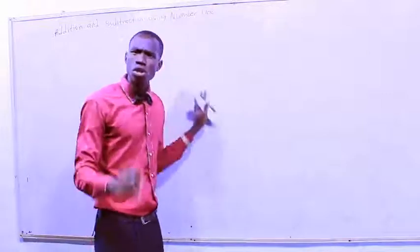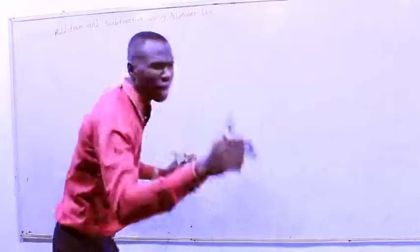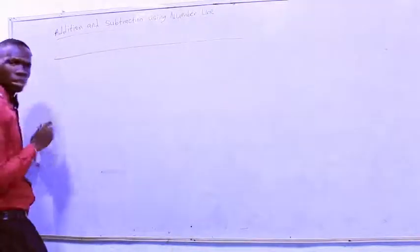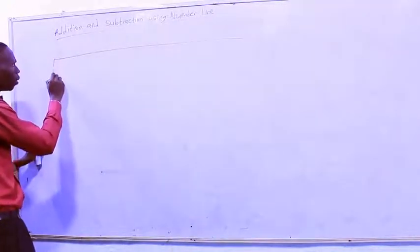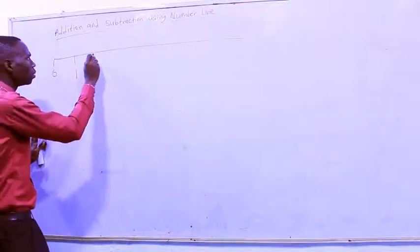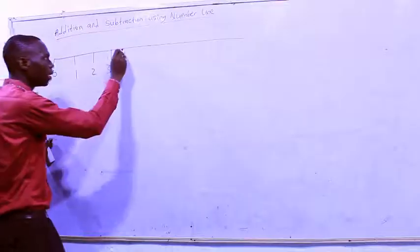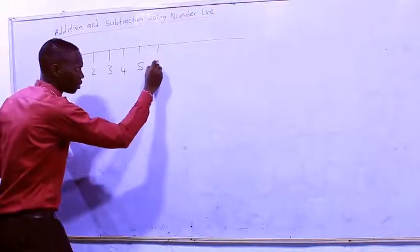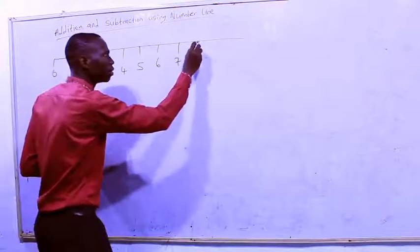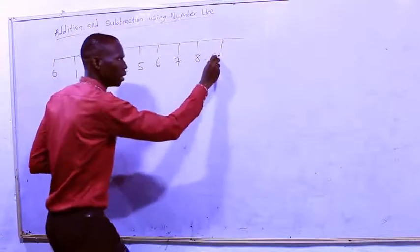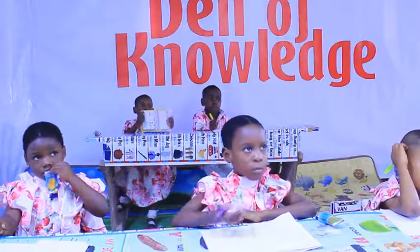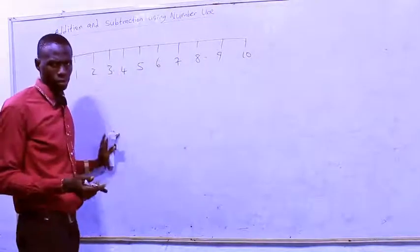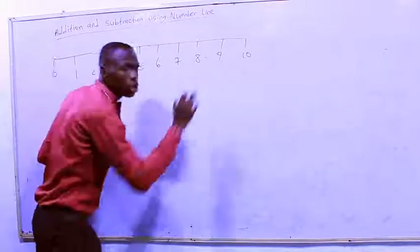Now how can we do this using a number line? A number line is just like a long line — a long line like this. It will start from zero: one, two, three, four, five, six, seven, eight, nine, and ten. Let's stop at ten, although we can reach twenty if we want to. This is what is called a number line.